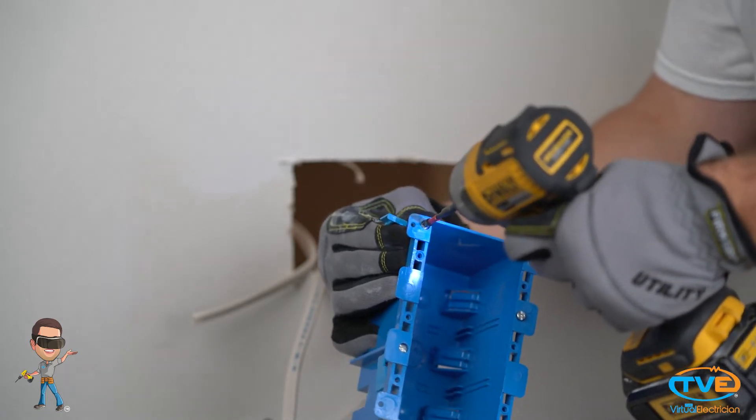Once the old box is out, it's time to install the remodel box. Take a screw gun and run the screws through the blue ears a couple of times. If you don't, those ears don't want to cooperate and you may end up stripping the screws.